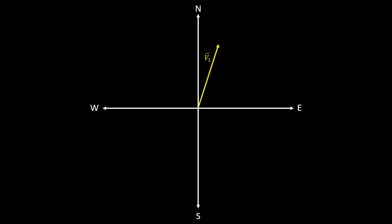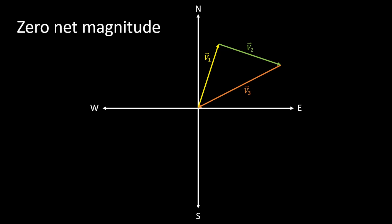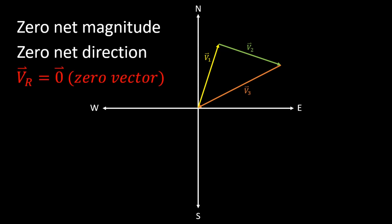Sometimes there would be examples wherein the given vectors would form an enclosed polygon — that is, the endpoint of the last vector would be at the origin itself. If this happens, the resultant vector would have 0 net magnitude and 0 net change in direction. You would then have what is called a zero resultant vector, or a zero vector.